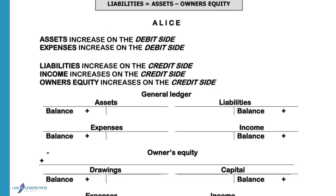Assets increase on the debit side, expenses increase on the debit side. These are your basic rules that you must understand. If you don't know these basic rules, you will not be able to do accounting. Liabilities increase on the credit side, income increases on the credit side, and owner's equity increases on the credit side.